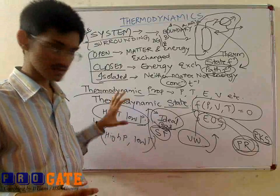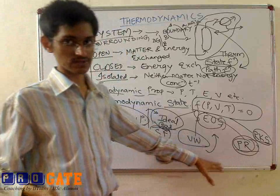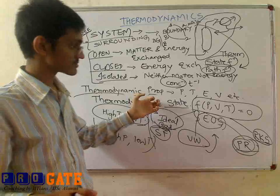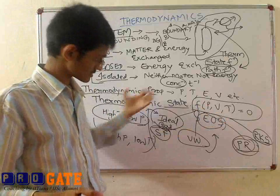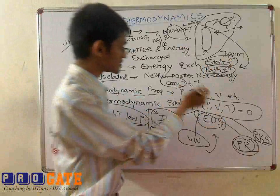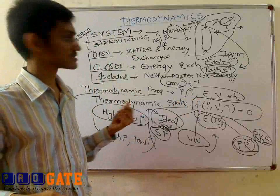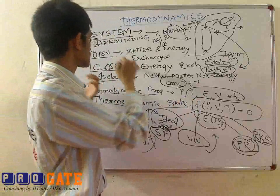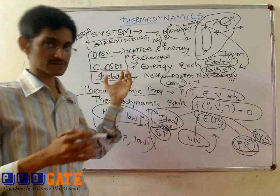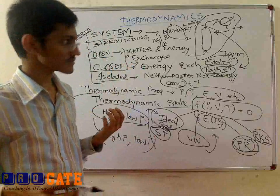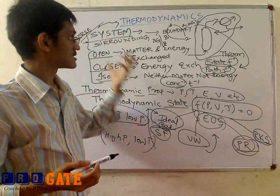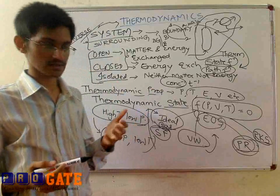This forms the basis of the thermodynamic terms that we will be using in further discussions. Topics covered: system, surrounding, universe, types of system — open, closed, isolated — thermodynamic properties, intensive and extensive, thermodynamic state, state function, and path function. From an exam point of view, you may have numerical problems based on these common terms, so understanding the definitions is required. Whenever a numerical is given, you first need to identify whether the system is open or closed to determine which equation to apply. That's all with the initial basics of thermodynamics. Now let's go further into the laws of thermodynamics and their applications.